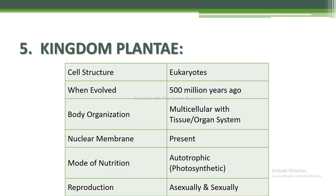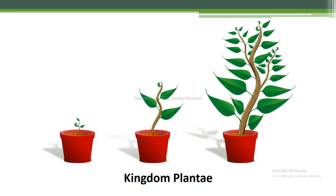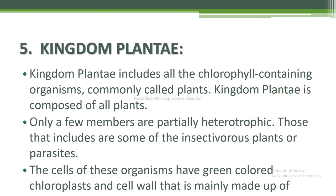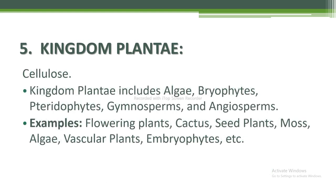Next is kingdom Plantae. Cell structure: eukaryote that evolved 500 million years ago. Body organization: multicellular with tissue and organ system, nuclear membrane present. Mode of nutrition: autotrophic and photosynthetic. Reproduction: asexual and sexual. Kingdom Plantae includes all chlorophyll-containing organisms, commonly called plants. Only a few members are partially heterotrophic — such as some insectivorous plants or parasites. The cells of these organisms have green-colored chloroplasts and cell walls mainly made up of cellulose. Kingdom Plantae includes algae, bryophytes, pteridophytes, gymnosperms, and angiosperms.